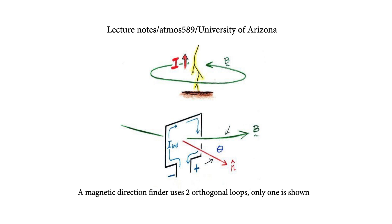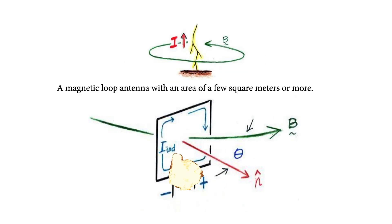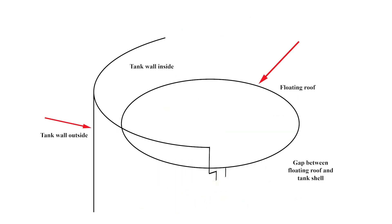Of course, you could use them for other purposes. For example, if the strike is close enough and the antenna is large enough, you could use a magnetic loop antenna to generate sparking capable of igniting flammable vapor.